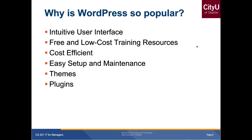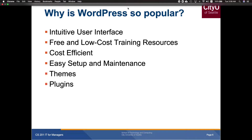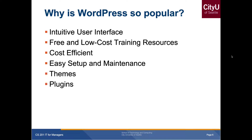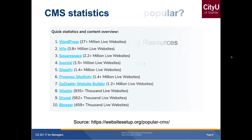So why WordPress? It's very popular, its user interface is really great, and there are free to low-cost training resources. It's cost efficient, easy to set up, and has teams and plugins. Most hosting providers provide WordPress, sometimes free, sometimes at low cost. Looking at market share, WordPress has 27 million users, and the next competitor Wix has 3.8 million — that shows how big WordPress is.